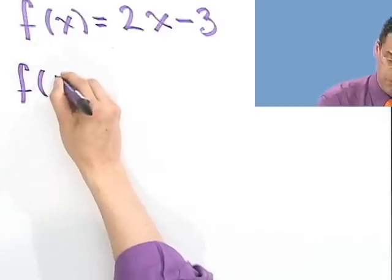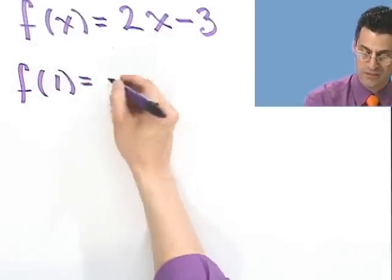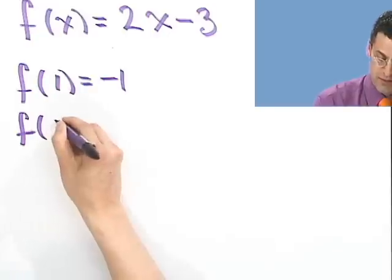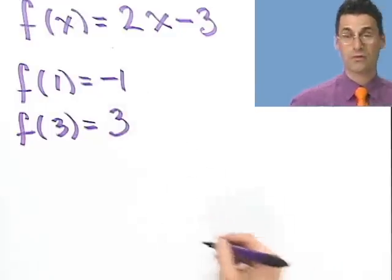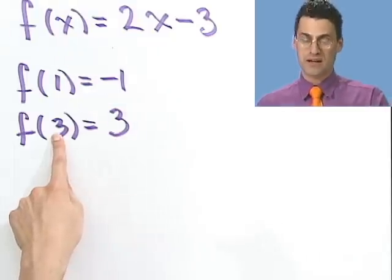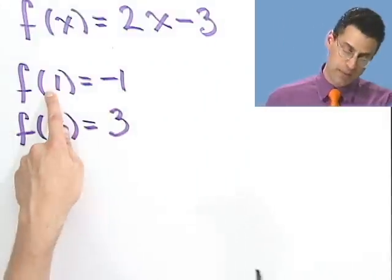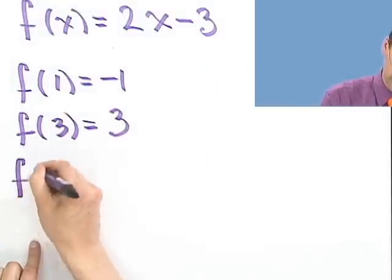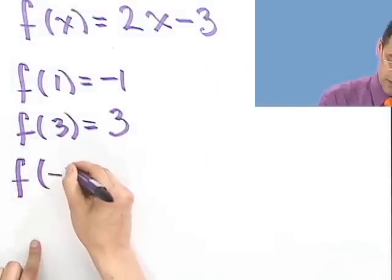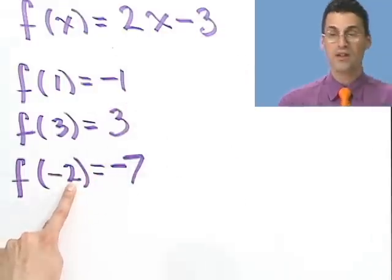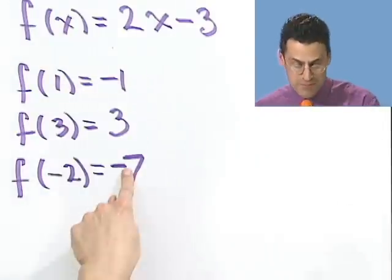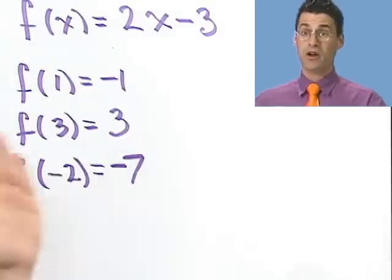So what would f(1) equal? f(1), if I put in 1, would give me negative 1. f(3) would give me what? This would be 6 minus 3 would be 3, and so forth. So what I want is another function that has the property that if I input 3, it'll spit out the original 3. If I input minus 1, it'll spit out the original 1. For example, what if I put in minus 2? If I put in minus 2 here, I see minus 4 and 3 is minus 7. So I want this new function: when I input minus 7, it outputs minus 2. Do you see how it would untangle?